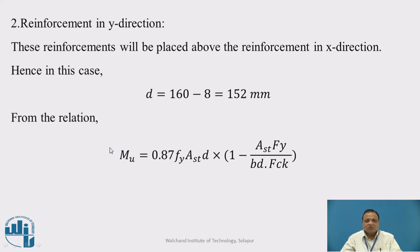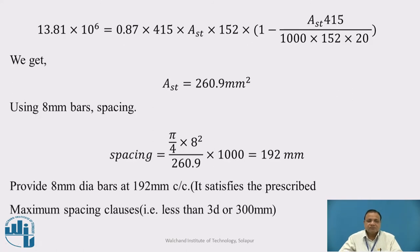From relation G.1.1B, we calculate the area of steel in Y direction. MU equals 0.87 Fy AST D times (1 minus AST Fy upon BD FCK). We get AST as 260.9 mm square. Using 8mm bars, spacing works out to be 192 mm. Therefore provide 8mm diameter bars at 190 mm center to center. It satisfies the prescribed maximum limit of clause 26.3.3B, that is 3d or 300 mm.